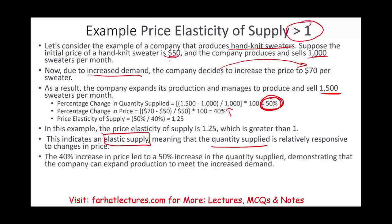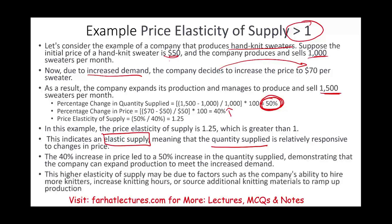Why can they do that? It could be that they were able to hire more knitters, increase knitting hours, or source additional knitting material to ramp up production. In order to do that, you have to have the resources without any limitations — a 40% increase in price led to a 50% increase in quantity supplied, which is elastic supply.